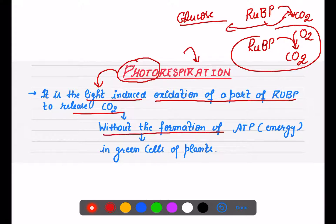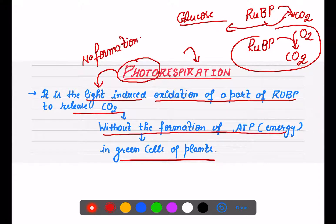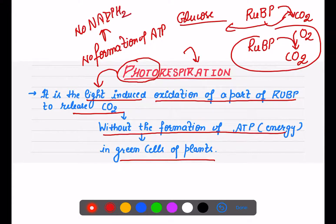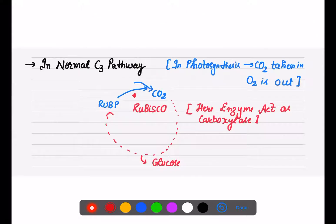This process occurs without any formation of ATP in the green cells of the plant. There is no formation of ATP, no NADPH2, no energy is produced, nothing is released. Basically, we don't get any kind of ATP from this process.